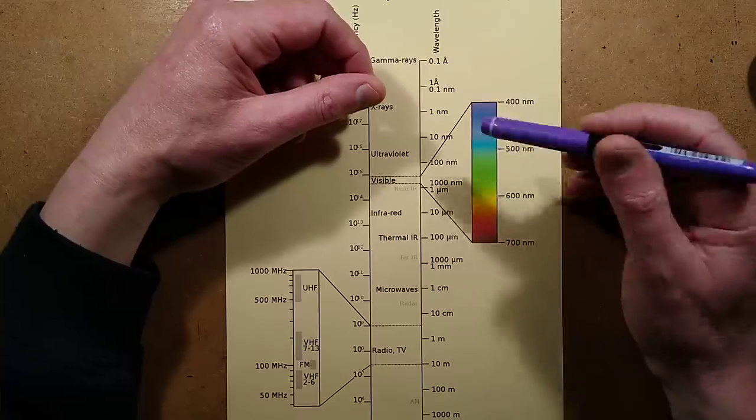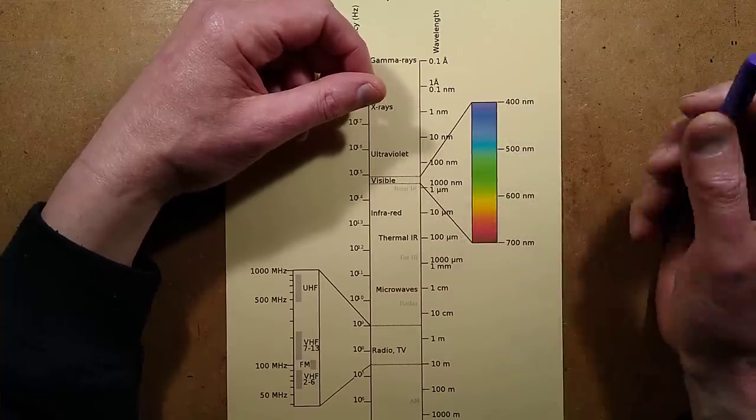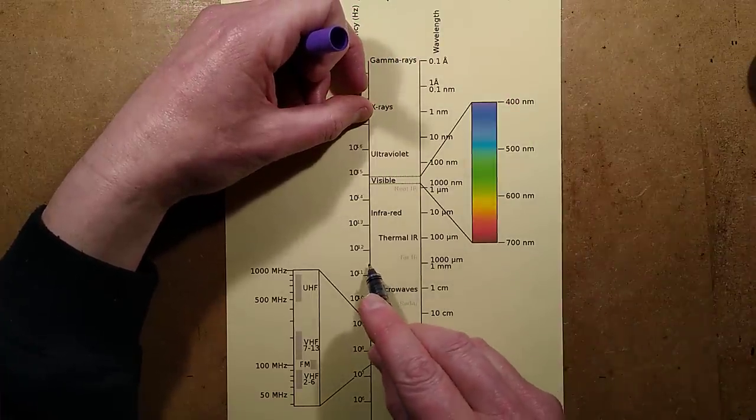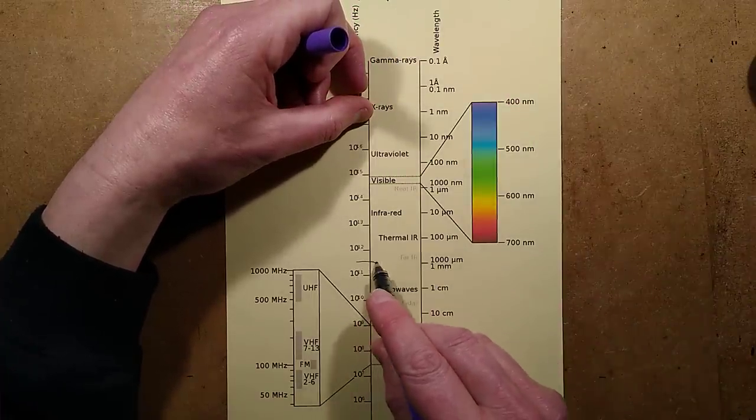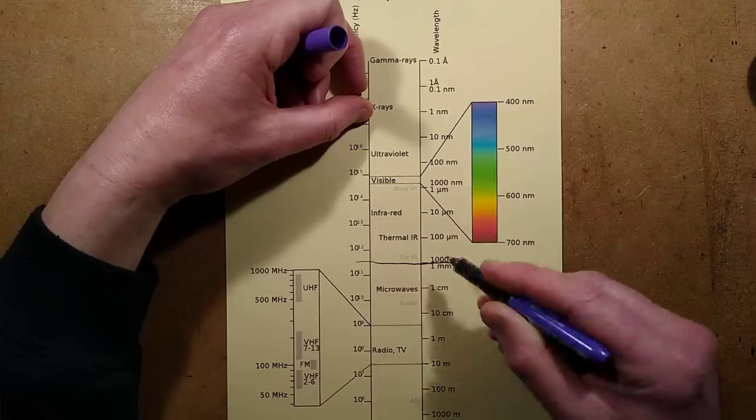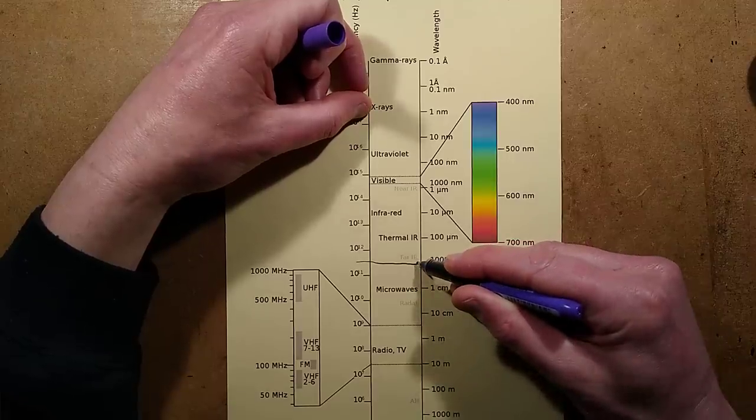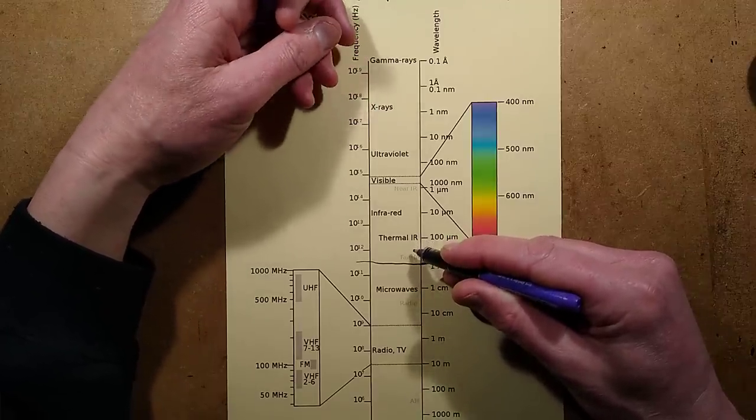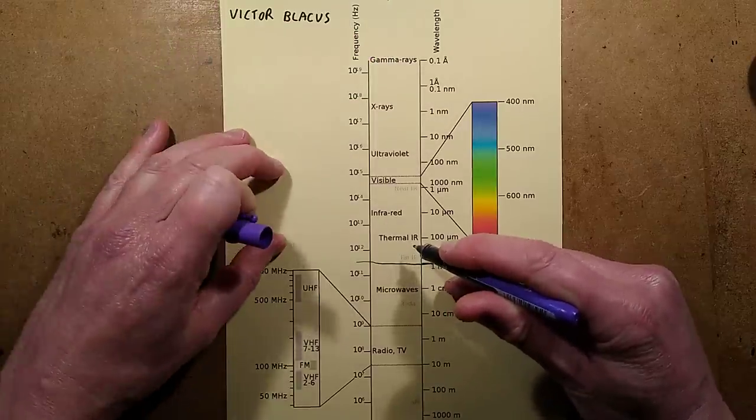To put things into perspective, although the new communication standard goes up to 300 gigahertz, which is coincidentally about one millimeter, it's really interesting that it just stops short as it starts moving into the infrared section of the spectrum. At this point, it's worth mentioning radiation.